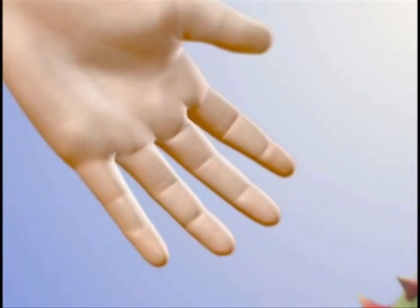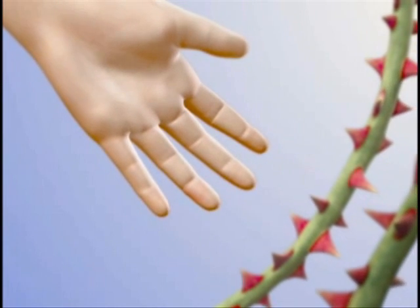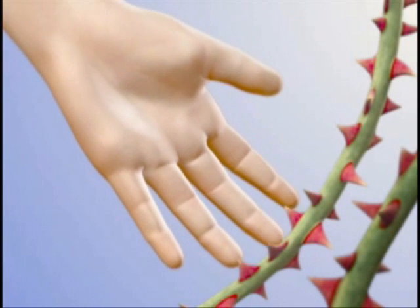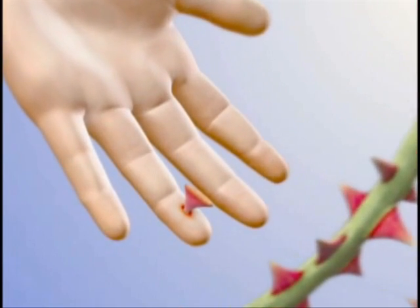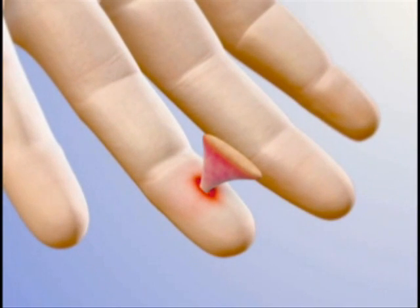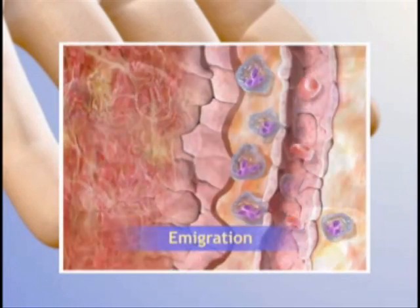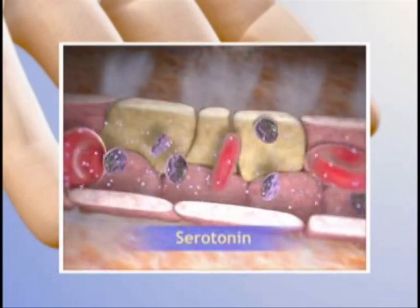Inflammation is the protective reaction of vascularized tissue to local injury. Acute inflammation is the early, almost immediate reaction of tissue to injury and is the first phase of wound healing. It can be triggered by cell or tissue damage, dead cells, or noxious agents such as bacteria. Acute inflammation typically occurs before the immune response becomes established and aims primarily at removing the injury-causing agent and limiting the extent of tissue damage.